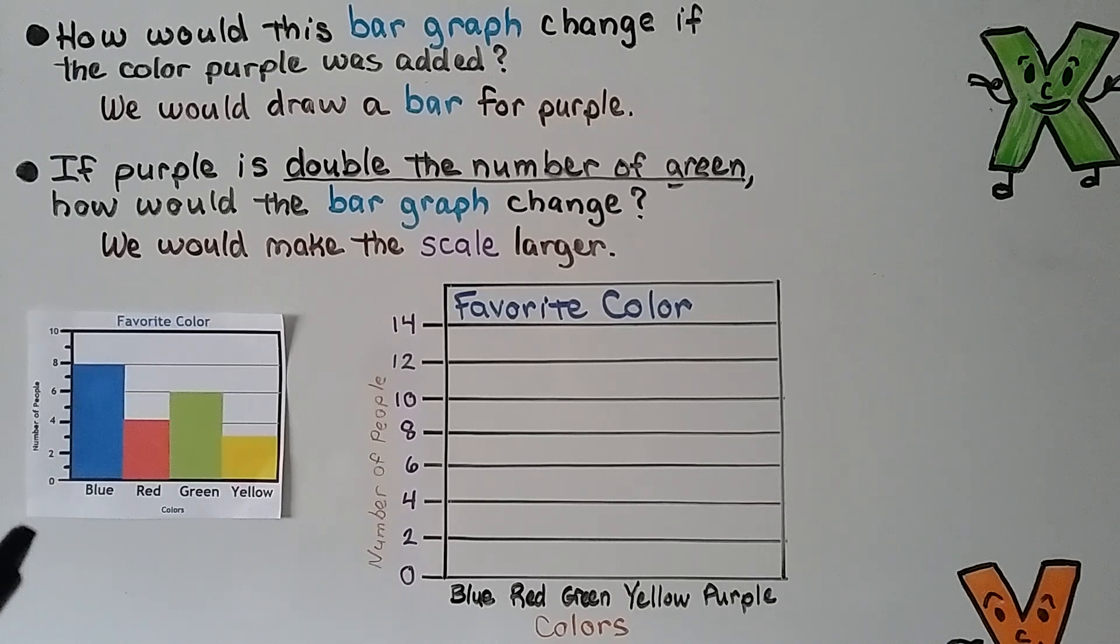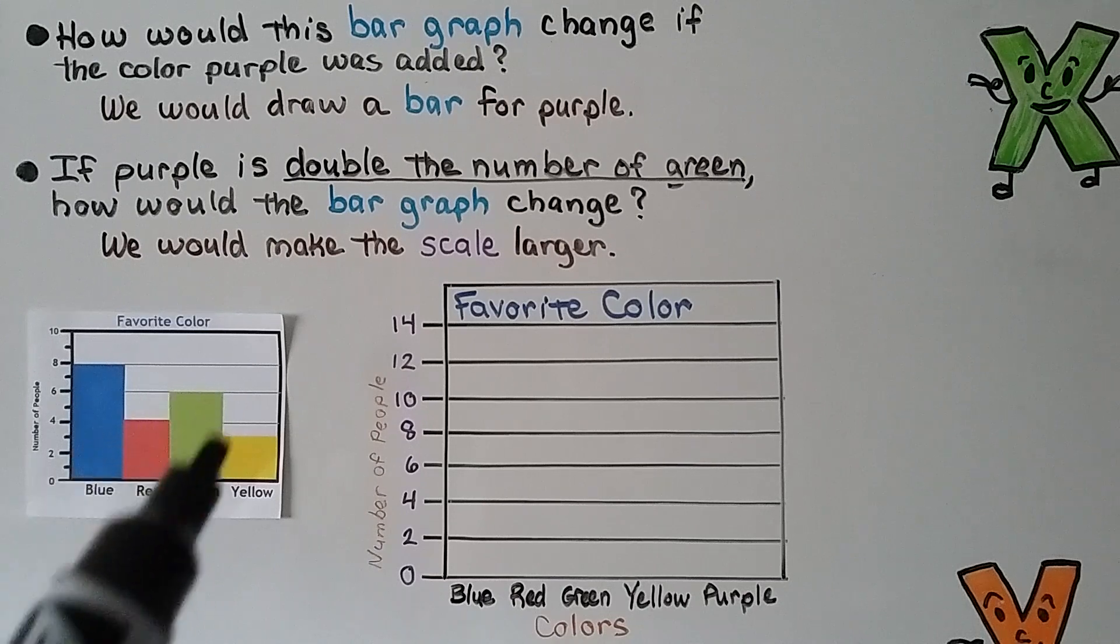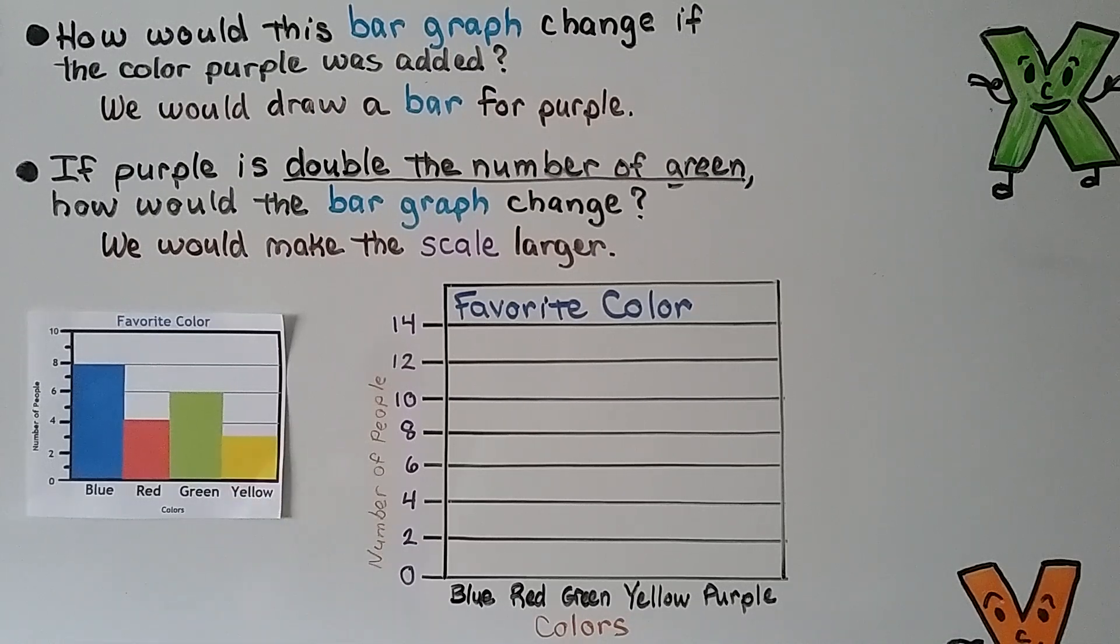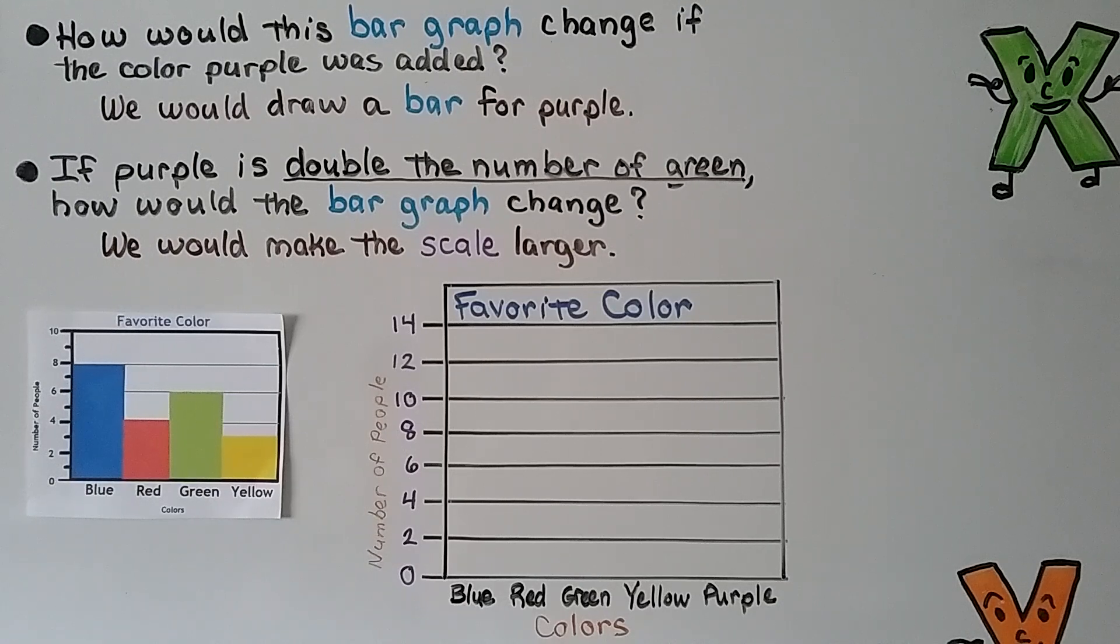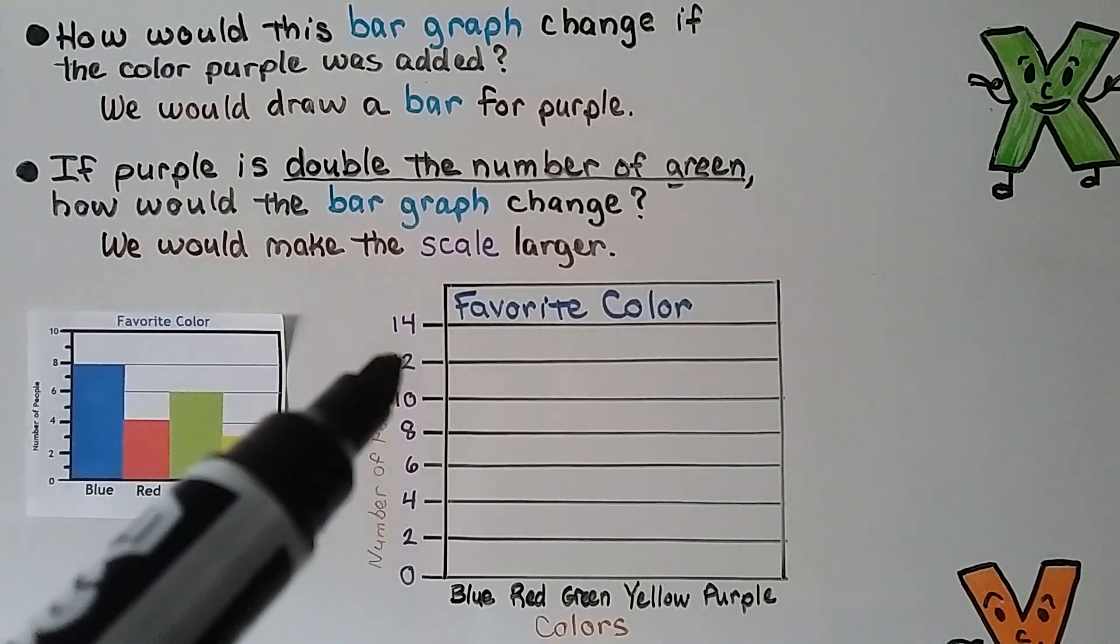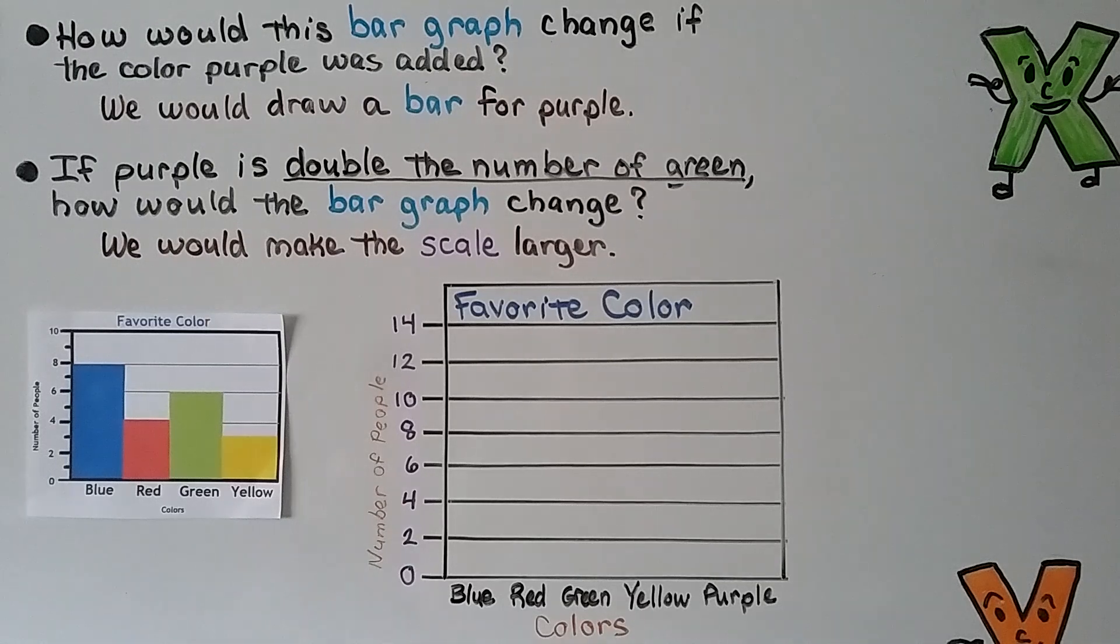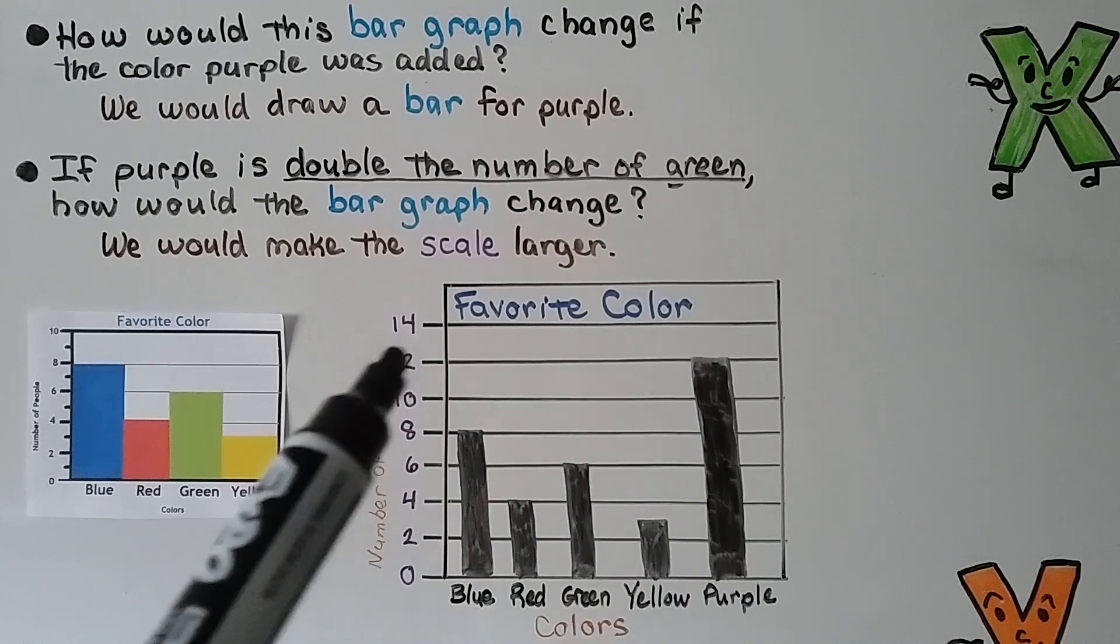Here we have our bar graph of favorite colors. How would this bar graph change if the color purple was added? We would draw another bar over here for purple and the graph would come out farther - we would add purple after yellow. If purple is double the number of green, how would the bar graph change? Green is 6. Double 6 is 6 plus 6, that's 12. We would make the scale larger so that we would have a bar for 12. Because it's going up to 12, we would make our scale go up to 14.